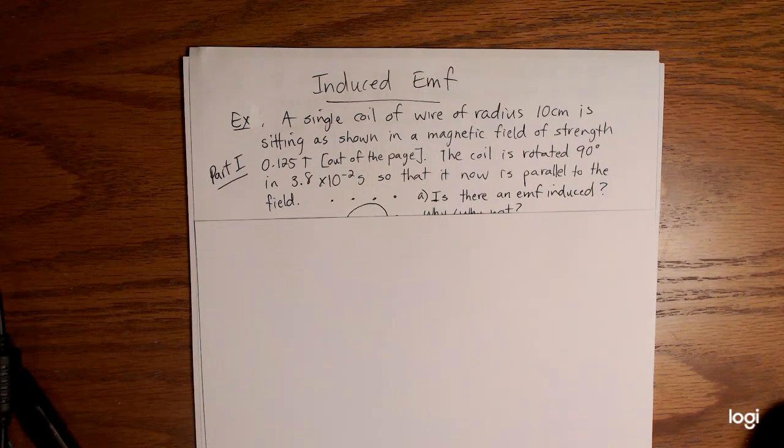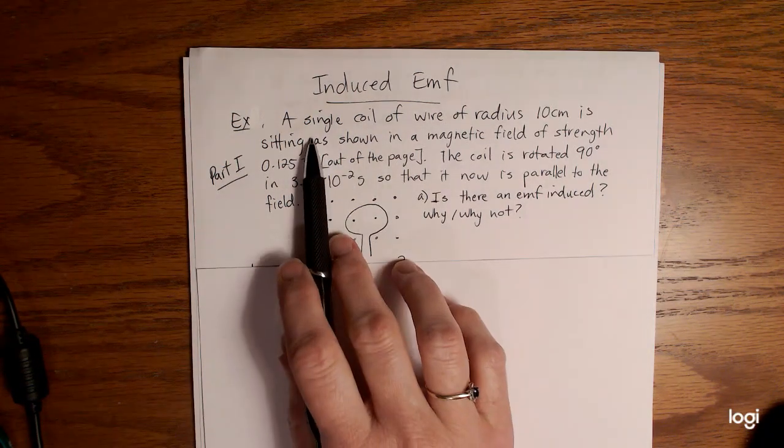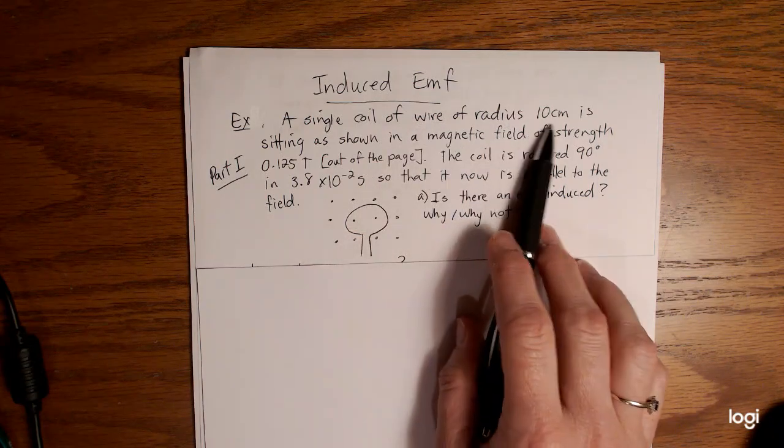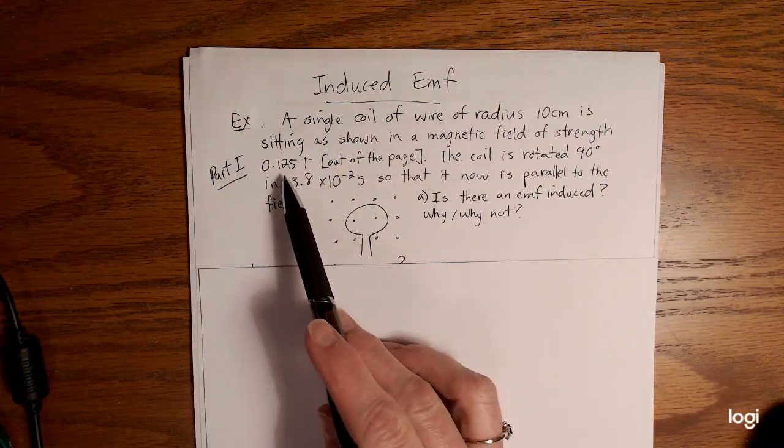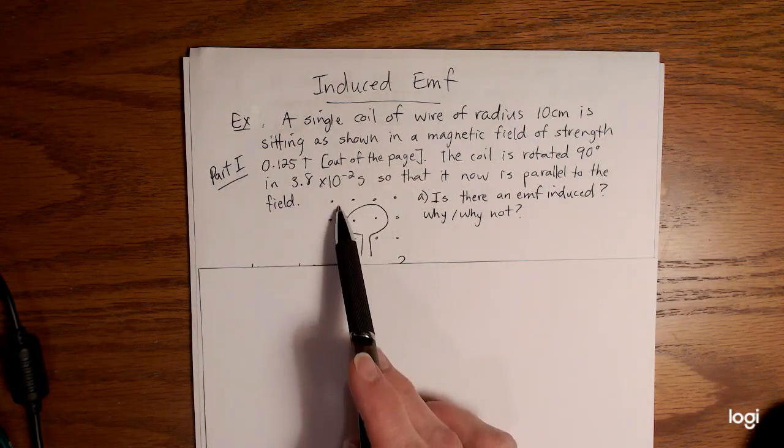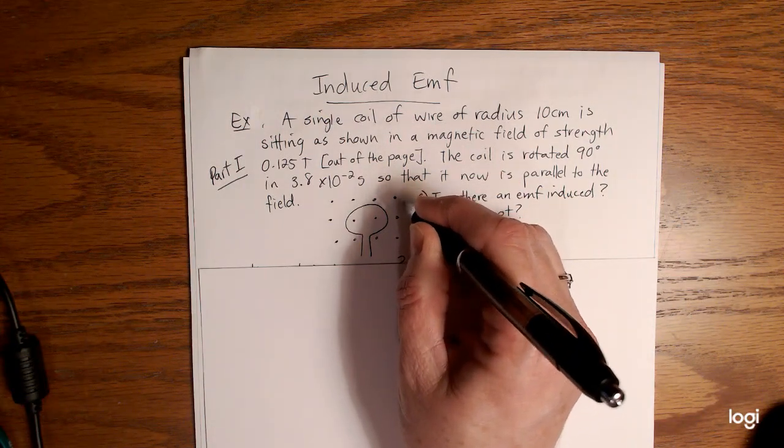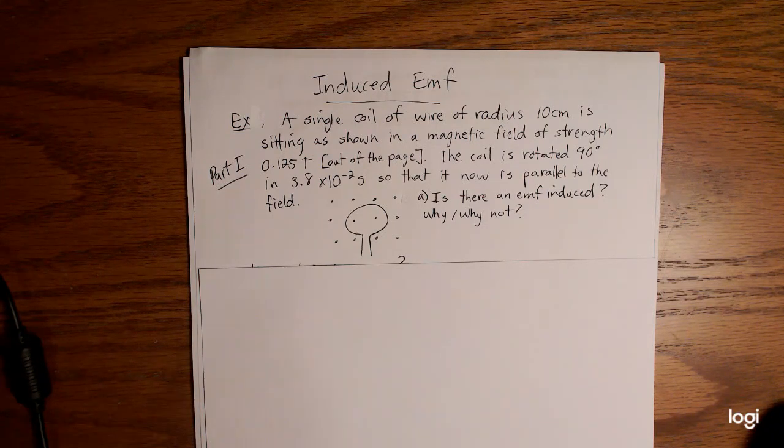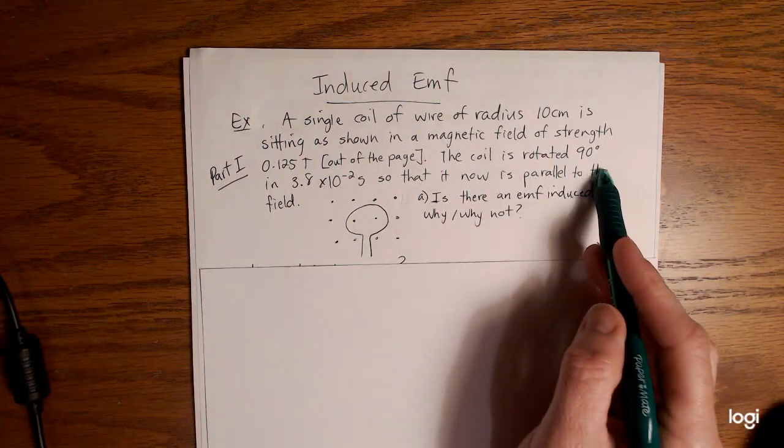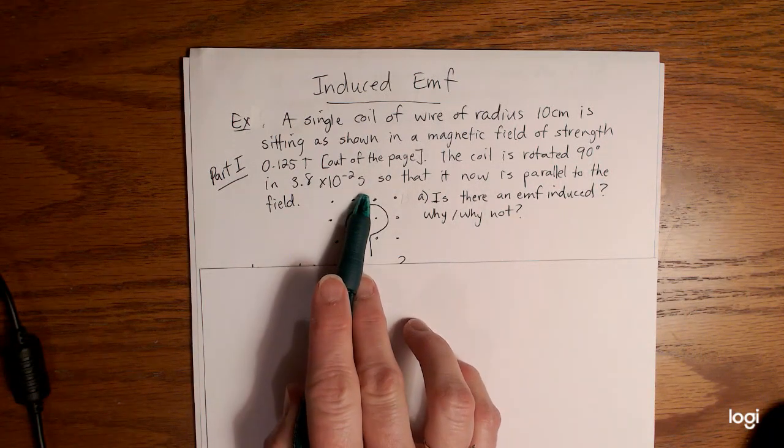Hello Physics 40S. We have an example here for induced EMF. We're going to look first at a single coil of wire of radius 10 centimeters sitting as shown in a magnetic field of strength 0.125 tesla out of the page, represented by these dots showing that it's acting out of the page.